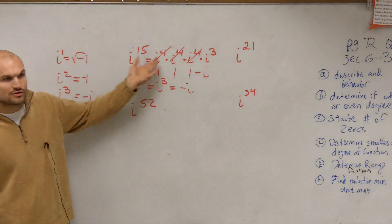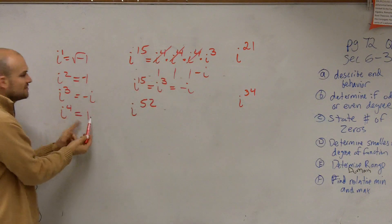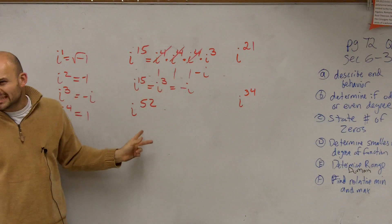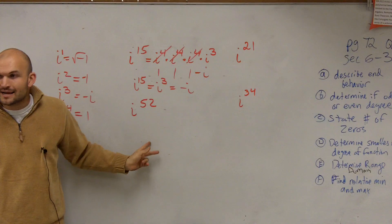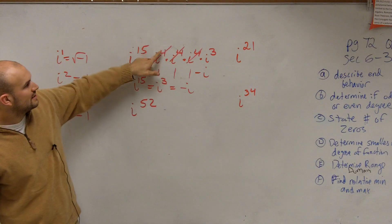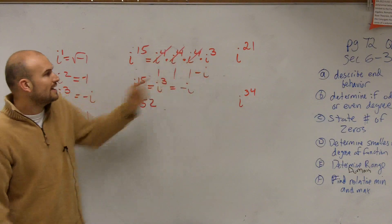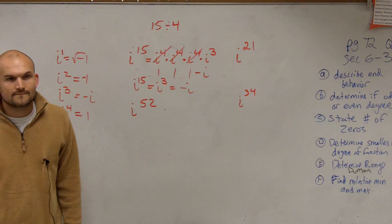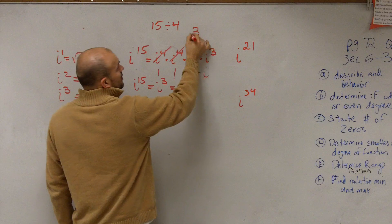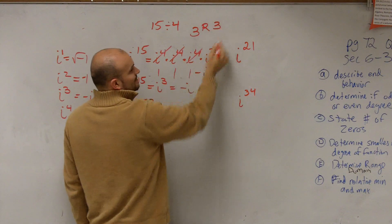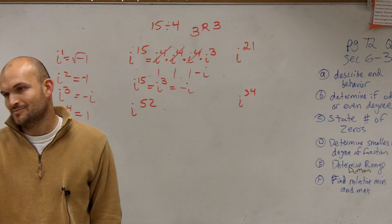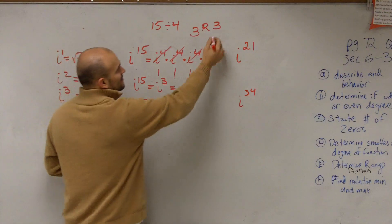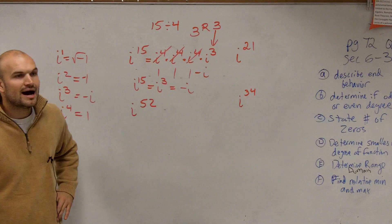Let's work on a shortcut. Rather than writing out i to the fourth repeatedly, what you can do is take the exponent — 15 — and divide it by 4. 15 divided by 4 is 3 with a remainder of 3. That remainder is going to be the exponent of your remaining i. So i to the fifteenth equals i cubed, which equals negative i.